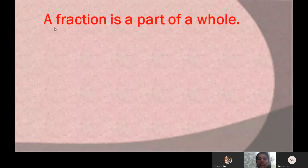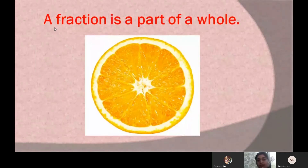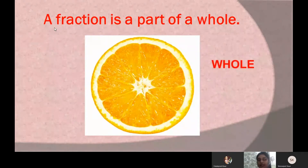A fraction is a part of a whole. Now the question is: what is a whole? When we have one thing, we say we have a whole. For example, here we are having a slice of orange, and this is called a whole.